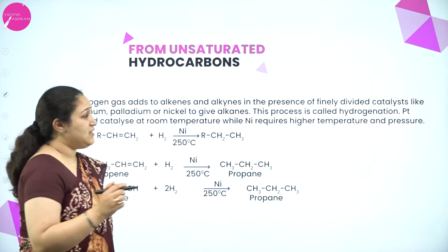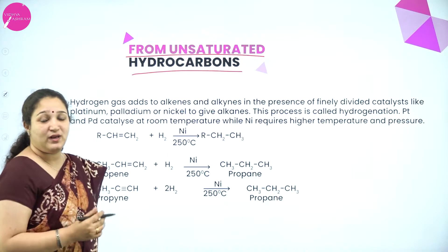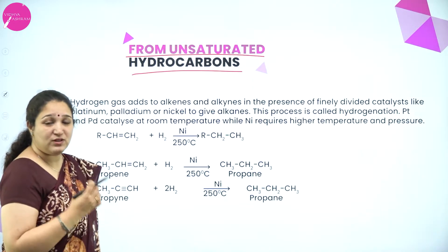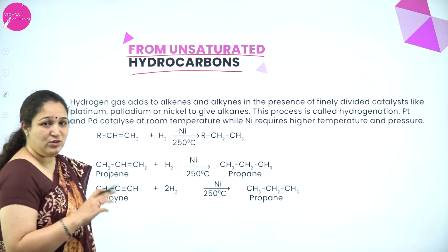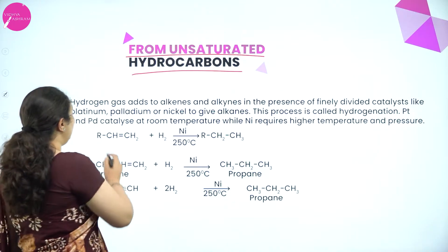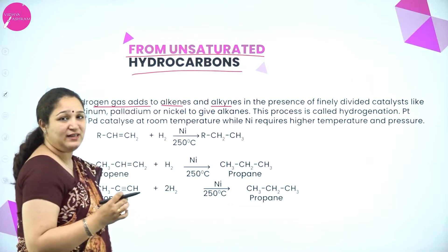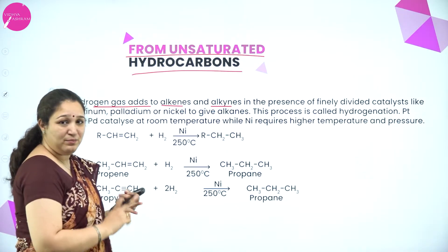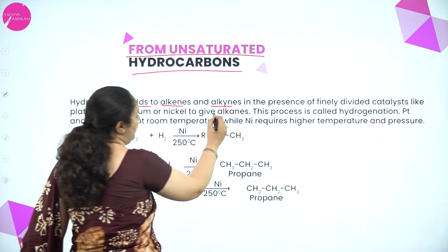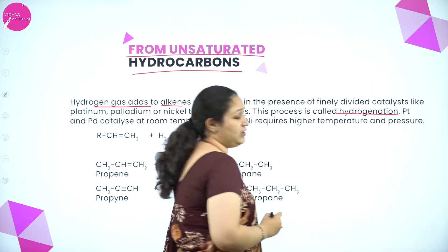The first method is from unsaturated hydrocarbons. Unsaturated hydrocarbons are alkenes and alkynes. For these, we can add hydrogen to get alkanes. Hydrogen gas is added to alkenes and alkynes in the presence of finely divided catalysts like nickel, platinum, palladium, etc., to give alkanes. This process is also called hydrogenation.